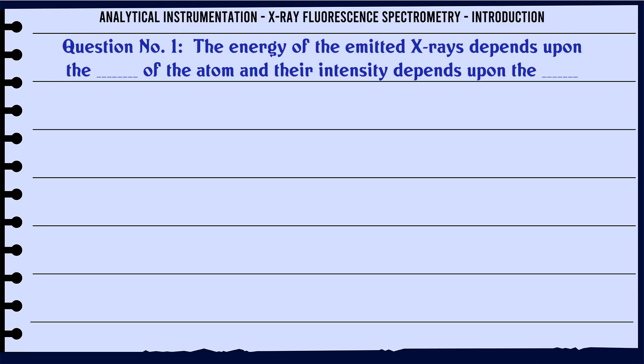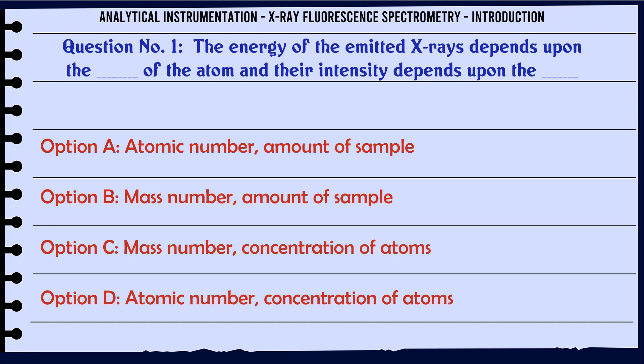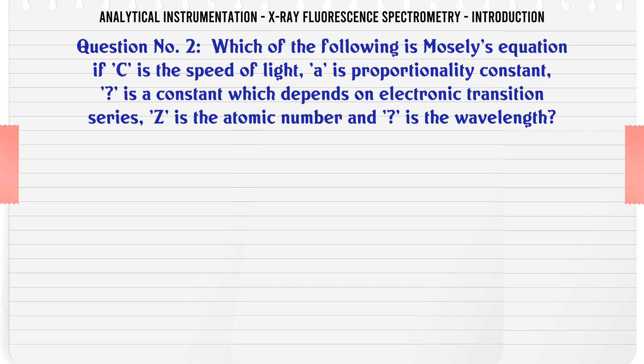The energy of the emitted X-rays depends upon the atomic number of the atom, and their intensity depends upon the concentration of atoms. The correct answer is: Atomic number, concentration of atoms.